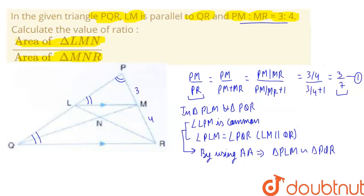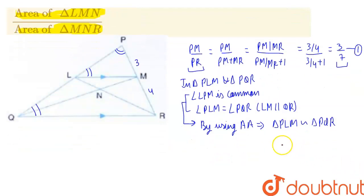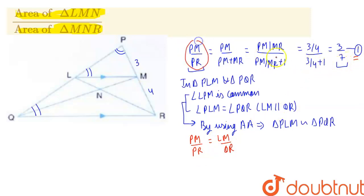Since triangles PLM and PQR are similar, their corresponding sides are in the same ratio. So PM upon PR equals LM upon QR. We know from equation 1 that PM/PR = 3/7, so substituting, we get LM upon QR equals 3/7.